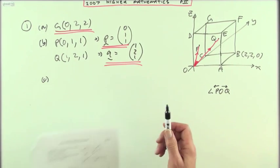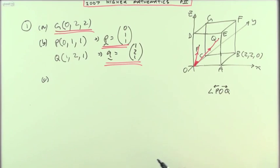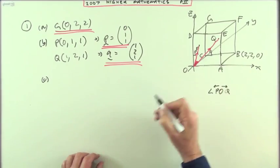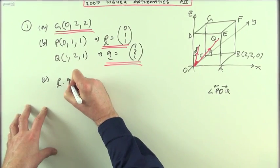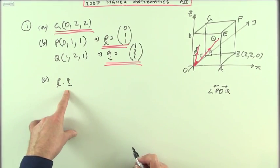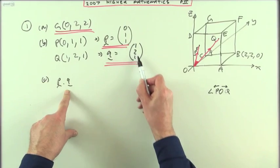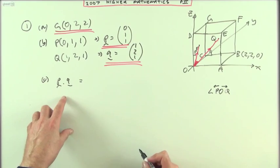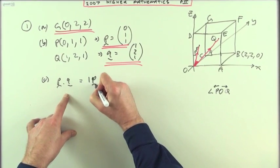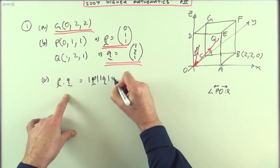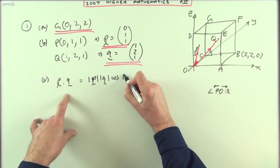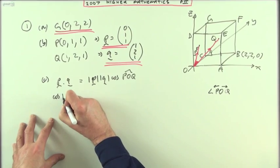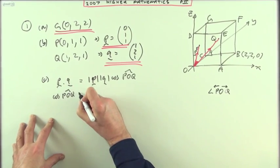Okay, so we're going to use the scalar product. There are two ways of working out the scalar product using vectors P and Q. You could work out P dot Q by multiplying the corresponding components and adding them up. You can also work out the scalar product P dot Q by multiplying their lengths times the cosine of the angle between them, which is POQ, and then just rearrange that.